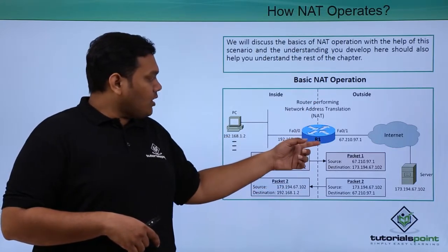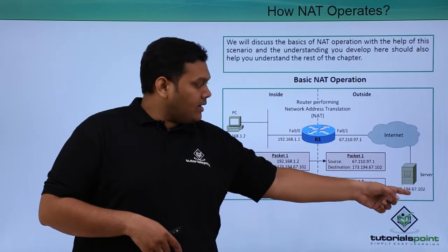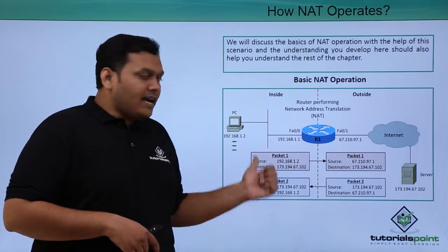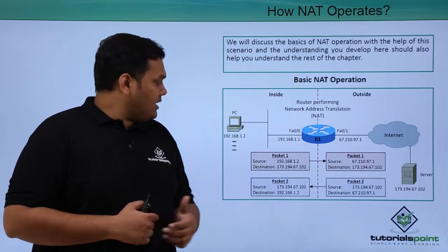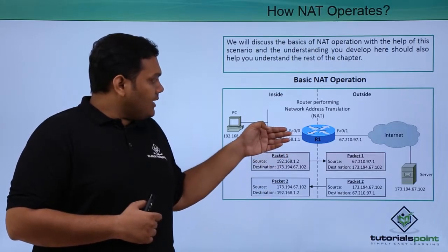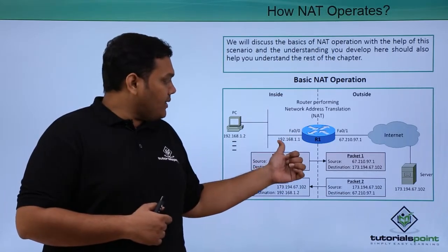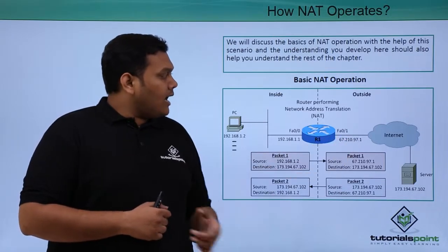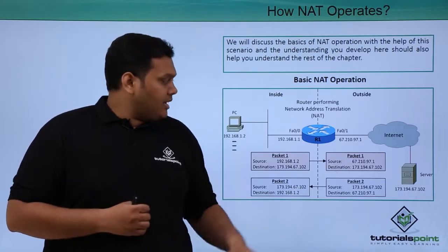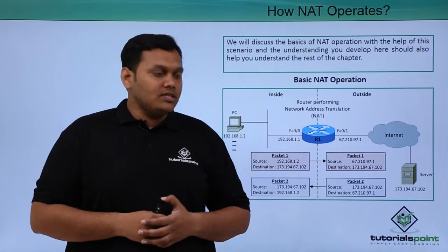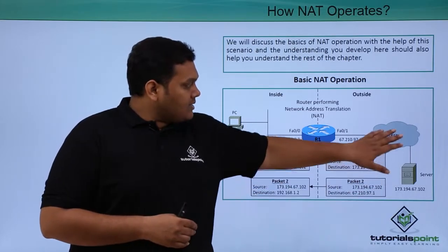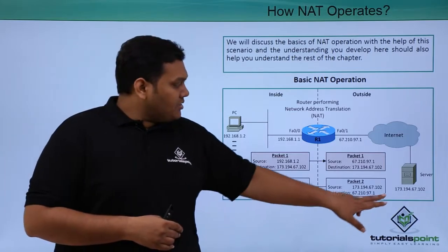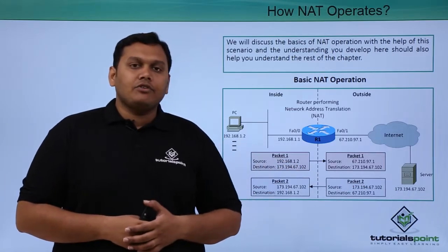The PC is connected to the router, and the router is connected to the internet. The server is also connected to the internet. The PC IP address is 192.168.1.2, the inside interface of Router 1 is 192.168.1.1, the outside interface fa0/1 is 67.210.97.1, and the server is connected with IP address 173.194.67.102.